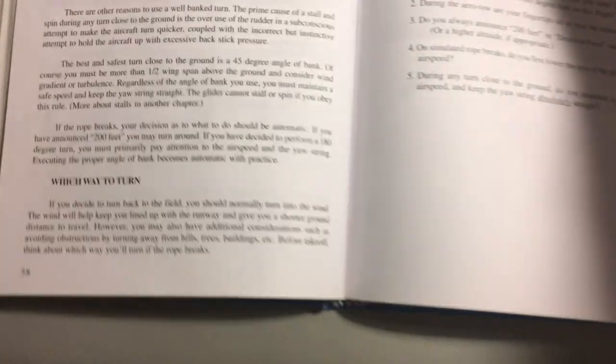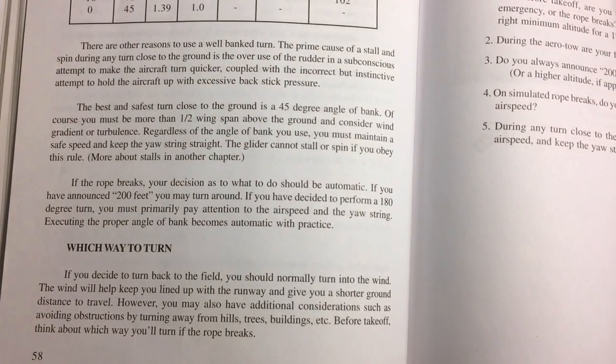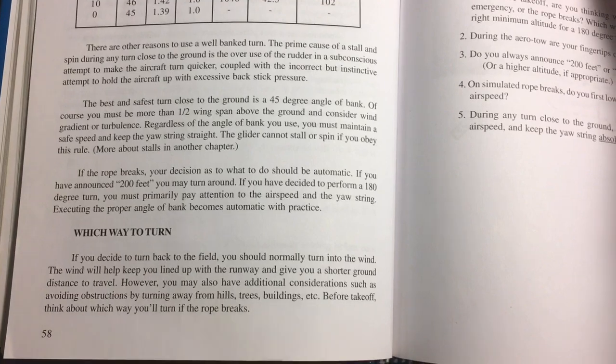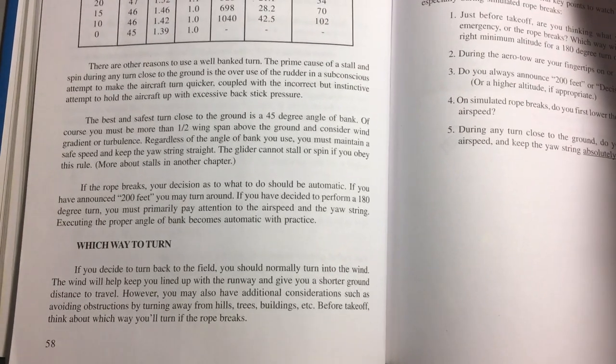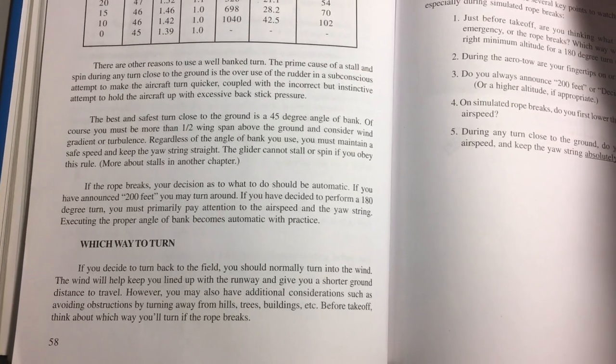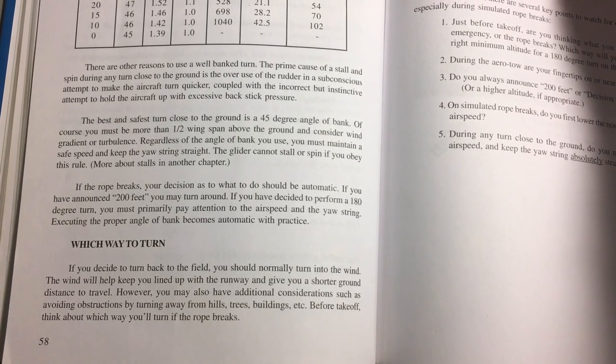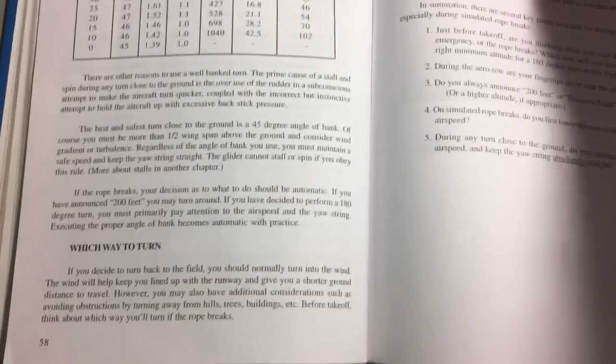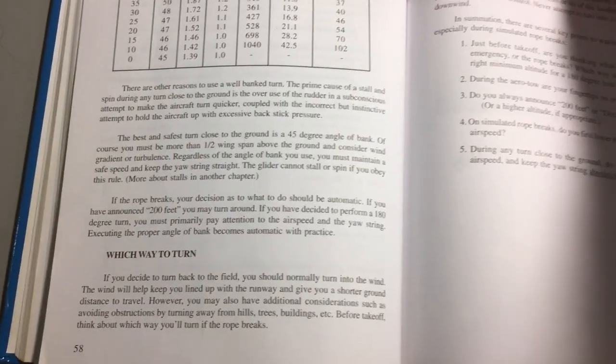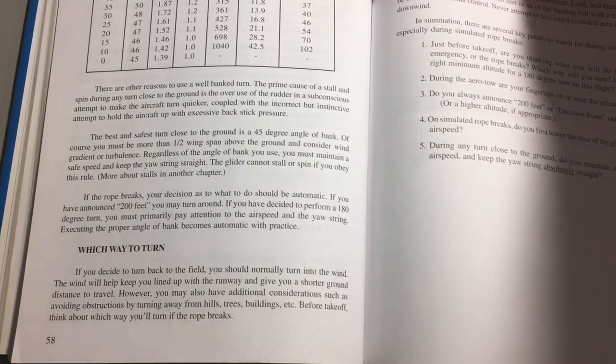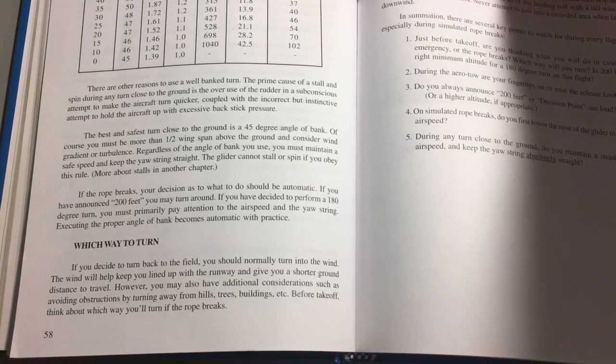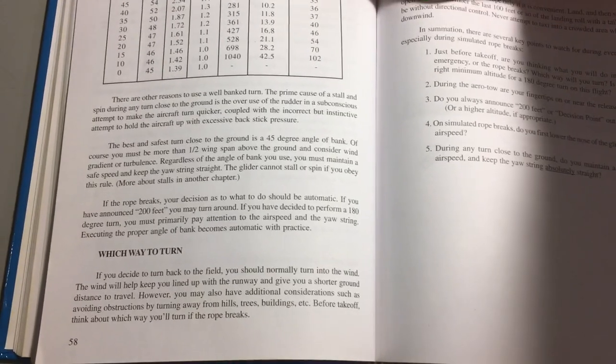However if you read the text it says the best and safest turn close to the ground is a 45 degree angle of bank. Of course you must be more than one half the wingspan above the ground and consider wind gradient and turbulence. So you can see we're doing an extremely tight 45 degree bank angle turn at 200 feet AGL to get back to the field.